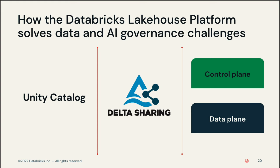To address these challenges, Databricks offers the following solutions: Unity Catalog, as a unified governance solution for all data assets; Delta Sharing, as an open solution to securely share live data to any computing platform; and a divided architecture into two planes — control and data — to simplify permissions, avoid data duplication, and reduce risk.